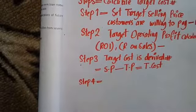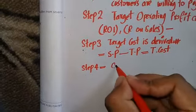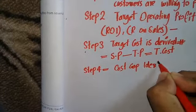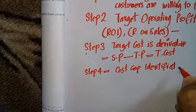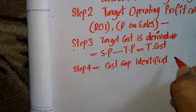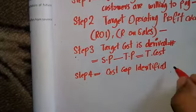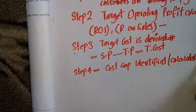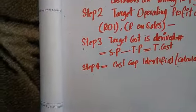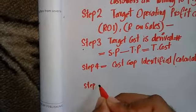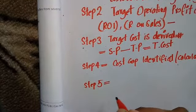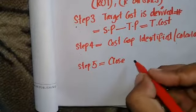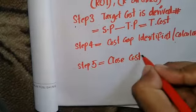Step four is the cost gap — identified and calculated. Step five is to reduce or close the cost gap. So, what are the circumstances and causes of a cost gap?